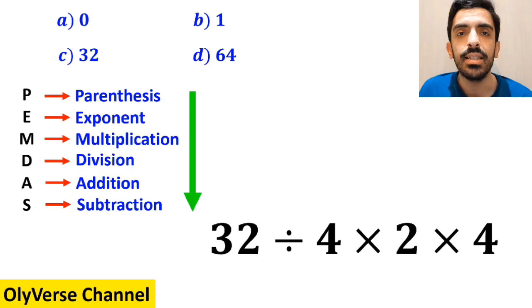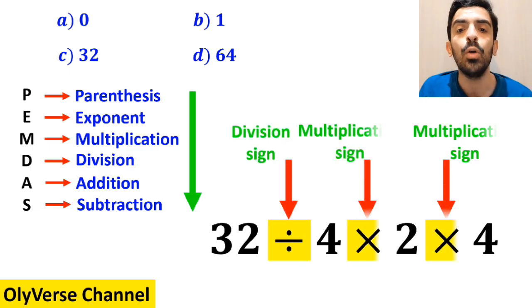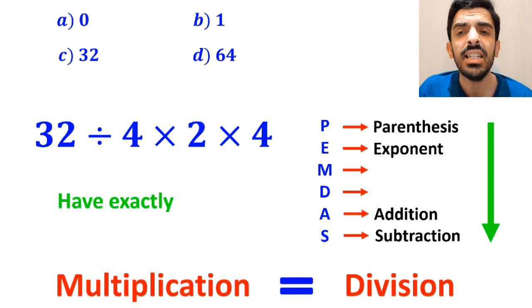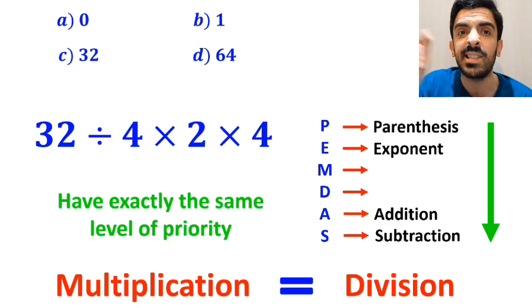As you can see on the screen, in this expression we have one division sign followed by two multiplication signs. We must pay close attention that multiplication and division have exactly the same level of priority in the PEMDAS rule.